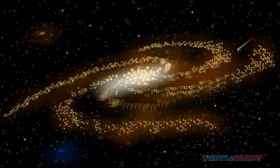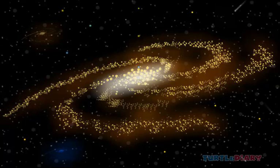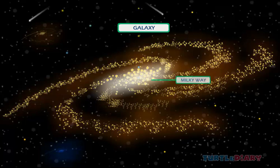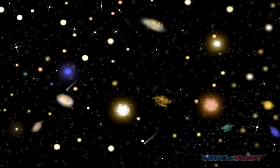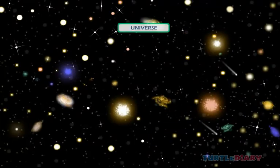All the stars that shine in the sky are like our sun. Many solar systems together form a galaxy. We live in the Milky Way galaxy, which is spiral in shape. Many galaxies together make the Universe.